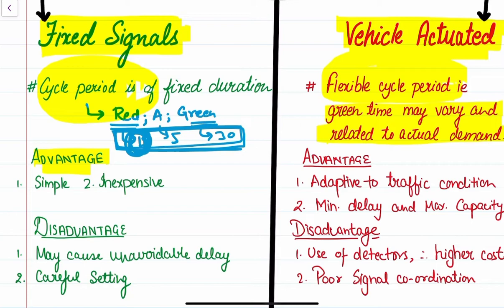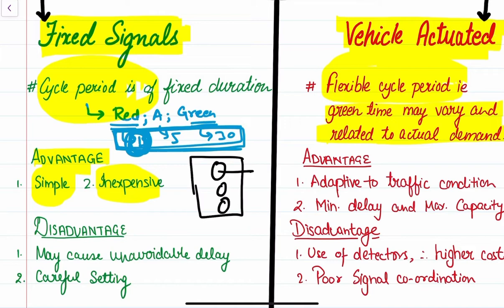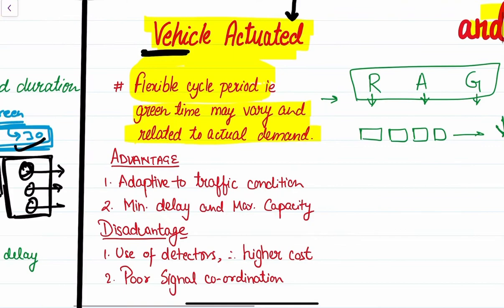The advantages of a fixed signal type: first of all, it is the simplest form of traffic signals and it is inexpensive. You install a traffic signal and simply set a time period — no supervision is required. The traffic signal will work accordingly irrespective of what the traffic condition is, as per the allotted time period. These are inexpensive compared to the vehicle-actuated type.